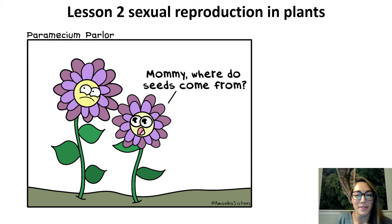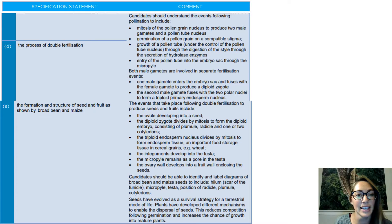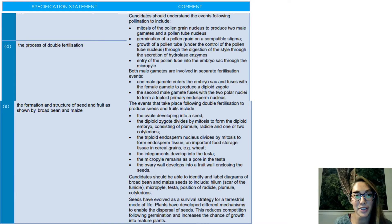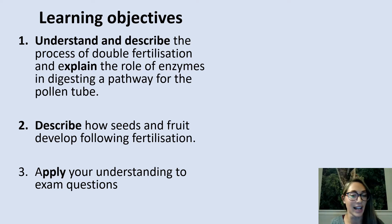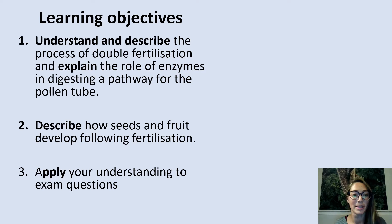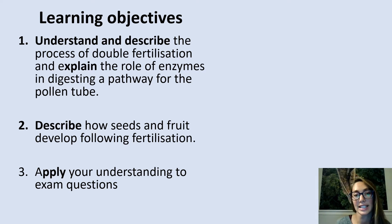Hello and welcome to lesson 2: sexual reproduction in plants. These are the spec points from the teacher's guide, so maybe pause the video and have a look at those. The learning objectives for this session are to understand and describe the process of double fertilization, explain the roles of enzymes in digesting a pathway for the pollen tube, and describe how seeds and fruit develop following fertilization.